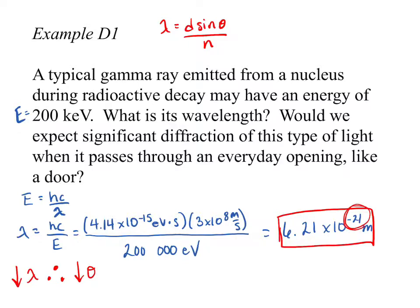With visible light, we're dealing with times 10 to the negative nine. And it's still only diffracts, you know, like a few centimeters. So to have something this small diffract would be absolutely crazy. So definitely no significant diffraction.